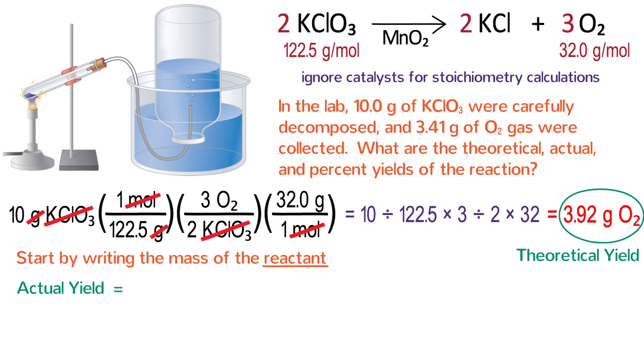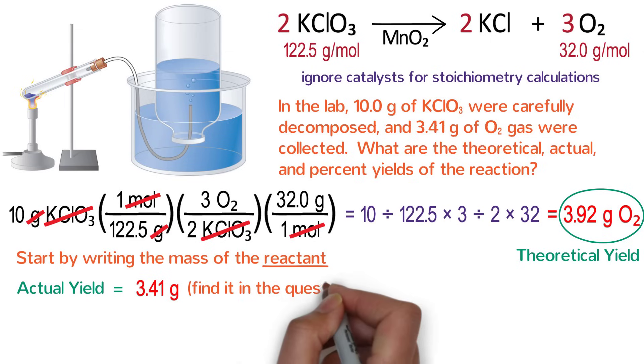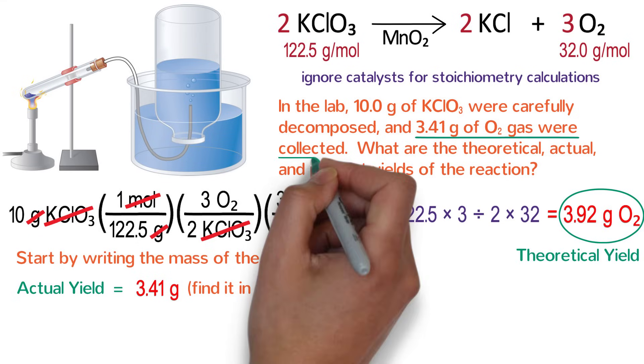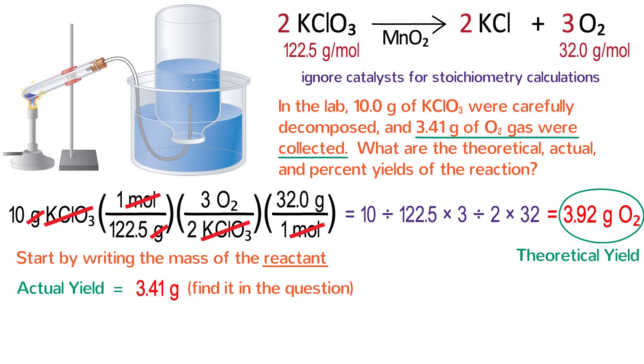What is the actual yield? How much O2 did we actually make and collect? 3.41 grams. Where did I get that number? Unless you are doing a lab, you always find the actual yield in the question itself. 3.41 grams of O2 gas were collected. That's the actual yield.